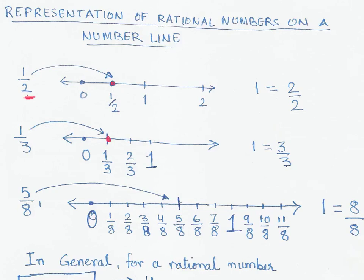Two simple examples done. What if we are given 5/8? We follow the same logic — we have to represent five parts out of eight parts. The distance from zero to one is divided into eight equal parts. Going along: one-eighth, two-eighths, three-eighths, four-eighths, and five-eighths — we highlight this fifth point to represent 5/8 on the number line.